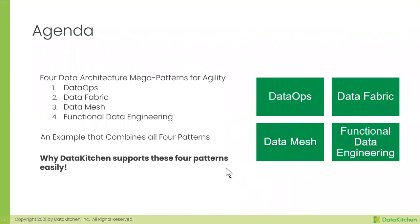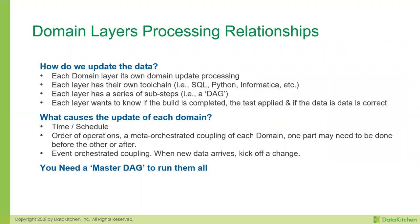These three patterns — DataOps, data mesh, functional data engineering — are great ways applied on whatever data fabric you have running. They are a way to achieve agility. The last section talks about how our software helps. We've talked about domains and the processing relationship. How do you update the data and connect one step to another? What causes the update of each domain — is it time, orchestration, or an event? You need a master DAG — a directed acyclic graph — a way to sit above all of it, a meta orchestration.